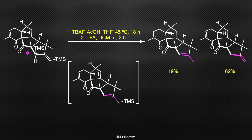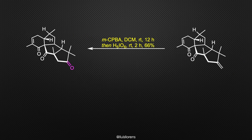The tetracycle was then treated with TBAF to give an allylic silane that was exposed to TFA in dichloromethane to produce the desired terminal alkene in 62% yield and the undesired internal alkene. Exposing the terminal alkene to MCPBA and periodic acid gave the triketone.